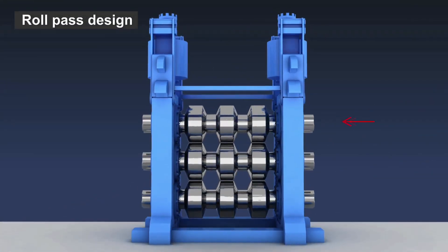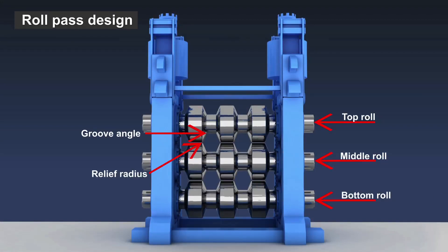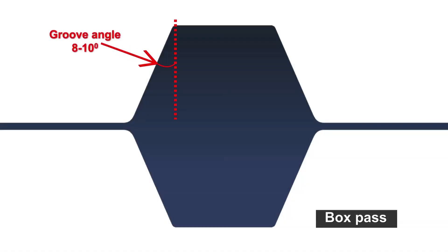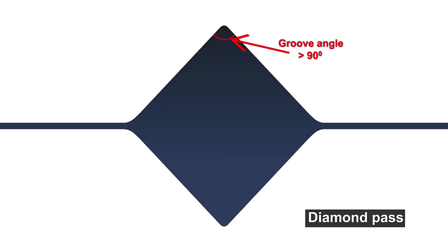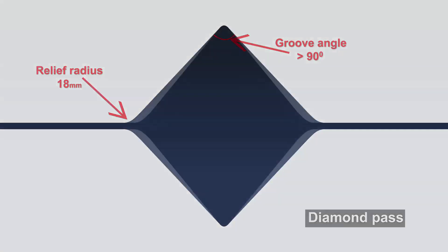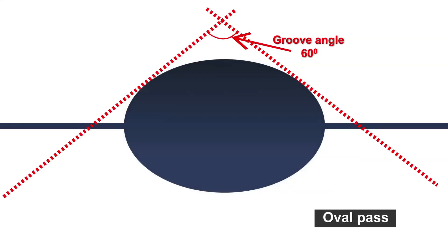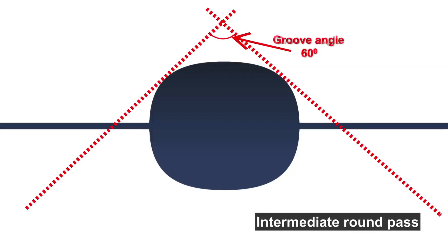Some thumb rules used in roll pass design: Groove angle for box pass should be 8 to 10 degrees. Relief radius for box pass should be 10 millimeters. Groove angle for diamond pass should be more than 90 degrees. Relief radius for diamond should be around 18 millimeters. Groove angle for square pass should be around 90 degrees. Relief radius for square pass should be 5 millimeters. Groove angle for oval should be 60 degrees. Relief radius for oval should be 5 mm. Groove angle for intermediate round pass should be 60 degrees. Bottom radius for rounds is half of the diameter.